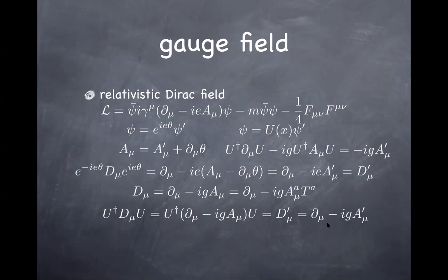The modern path integral point of view is that ψ is just a dummy variable of integration, and I'm allowed to change the variable from ψ to Uψ'. That's a substitution, not a symmetry transformation in the usual sense. Either approach is fine, but this change-of-variable perspective is least confusing to me. I stick to this approach when talking about symmetry transformations.